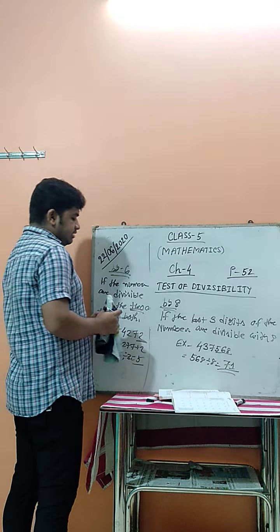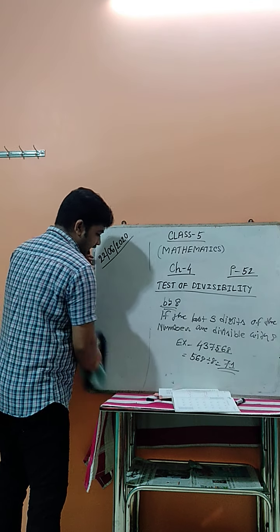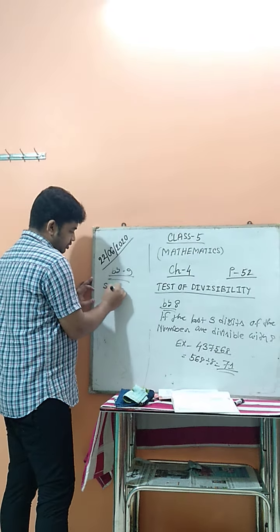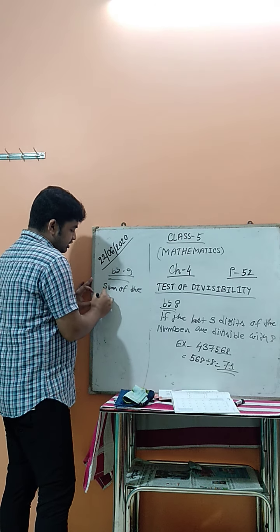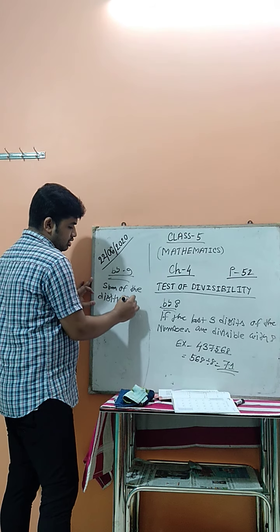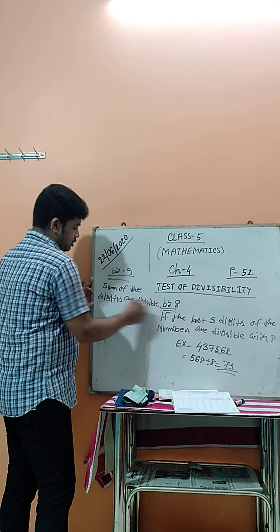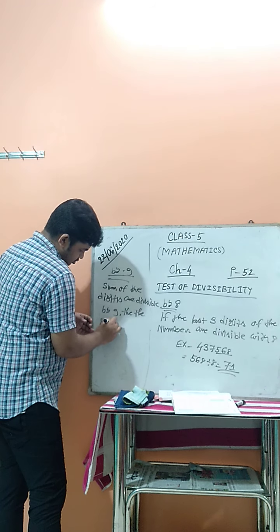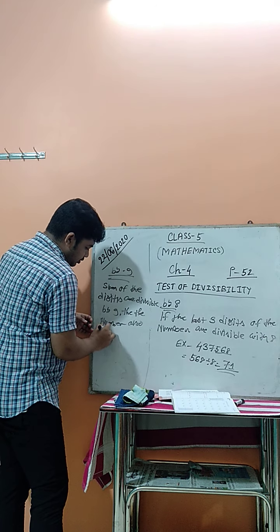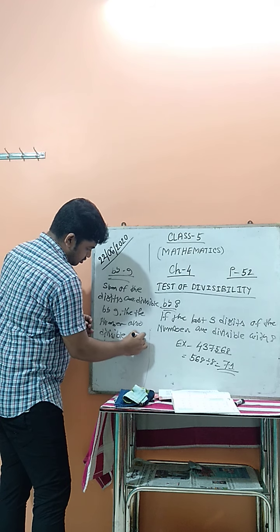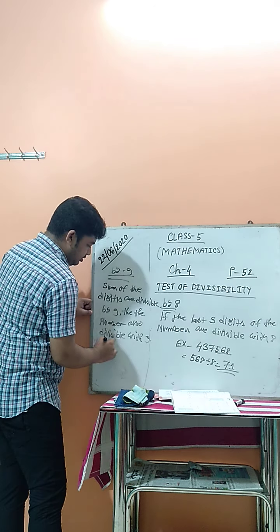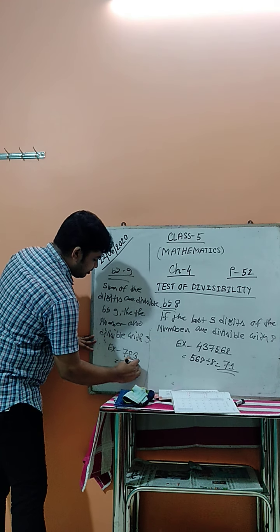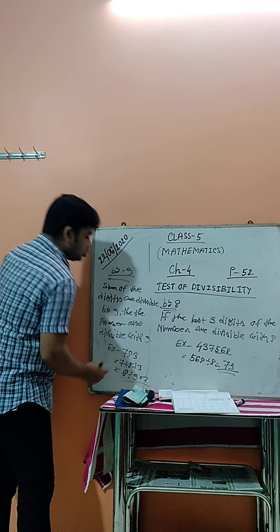For divisibility by 9: if the sum of the digits is divisible by 9, then the number is also divisible by 9. For example, take 783. Adding the digits: 7 plus 8 plus 3 equals 18. Since 18 divided by 9 equals 2, this number is divisible by 9.